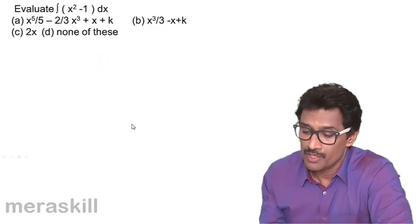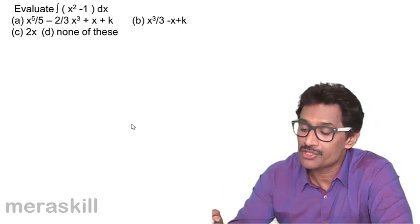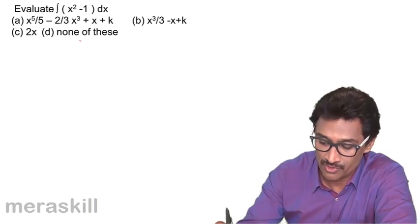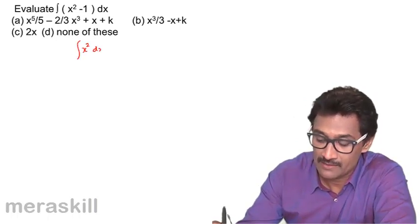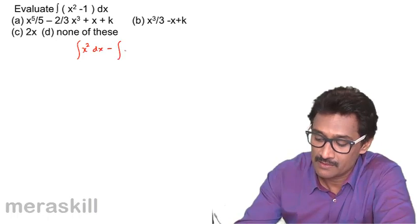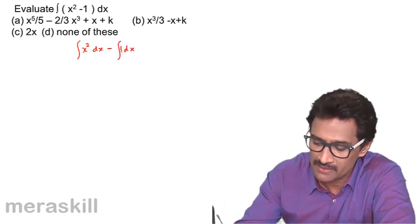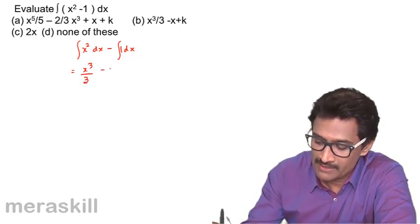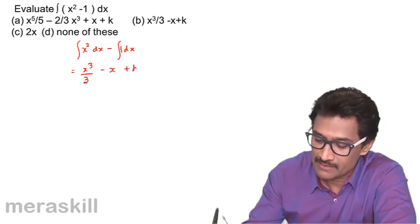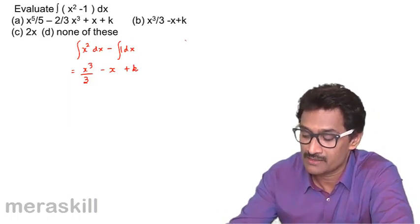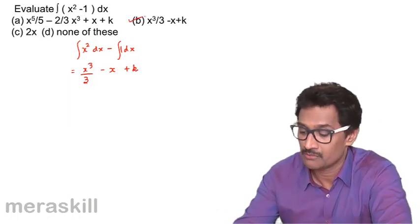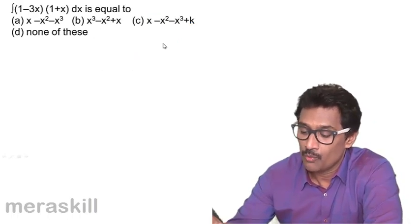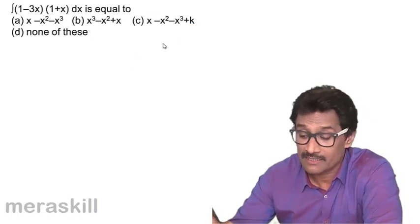Evaluate the integral of (x² - 1) dx. This splits into the integral of x² dx minus the integral of dx, which equals x³/3 minus x plus k. So the answer is x³/3 - x + k, which is option B.